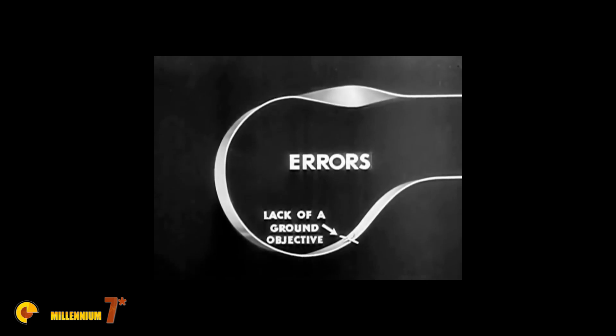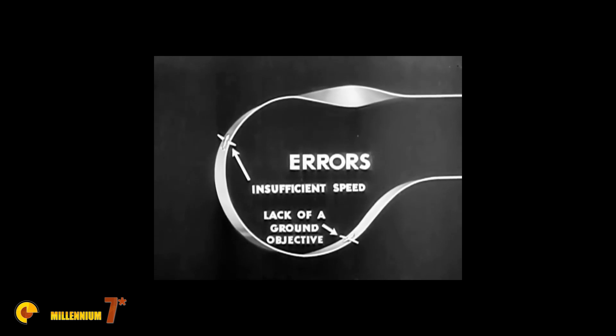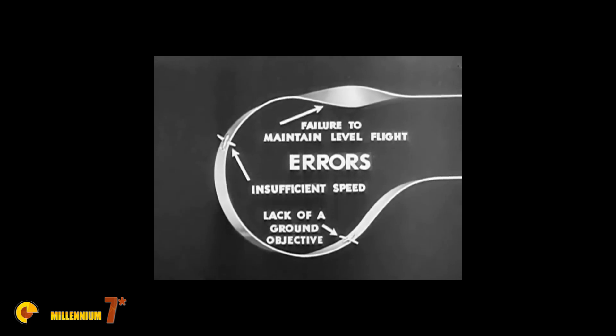The maneuver will not be a successful Immelman if these common errors are made. Failure to orient the maneuver toward a definite ground objective. Insufficient speed which may result in complete failure. And failure to maintain horizontal and level flight during the half roll.